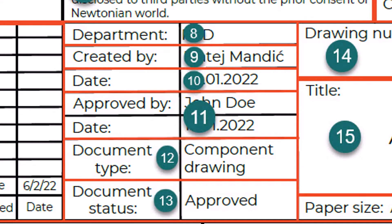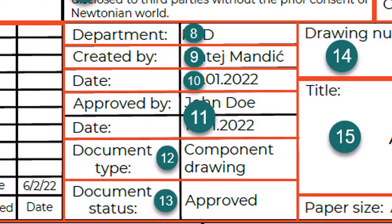Responsible Department refers to the internal department inside the company — it can be a department name or department code. Creator refers to the name of the person that created the drawing. Date of Issue represents the date when the part was officially released for the first time; every revision after the original design should also have a date of release. Approval Person is the name of the person who approved the document. Document Type states what type of document we are looking at — it can be a component drawing, assembly drawing, tabular drawing, fabrication drawing, outline drawing, or other industry/company-related drawings. Document Status: depending on the internal documentation management procedure, a document can be at different stages — draft, approved, reviewed, obsolete, etc.